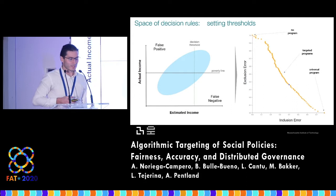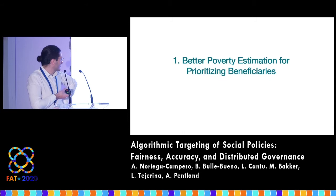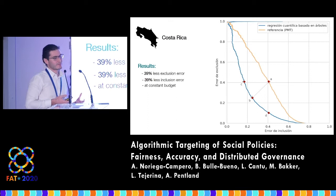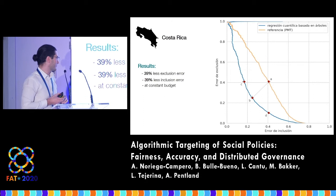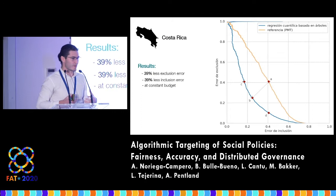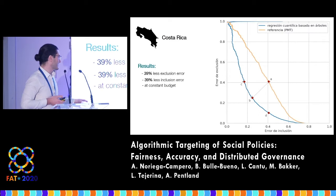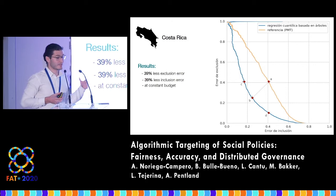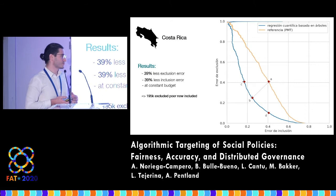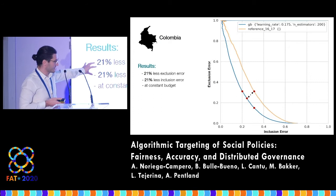How does a better poverty estimation method look like? These are results after a year of collaborating with the government of Costa Rica, where the orange line shows the reference methodology and the blue line is the best we could build together with them. Comparing point A versus point B, we were able to reduce by almost 40% both exclusion errors and inclusion errors while maintaining a constant budget. In terms of people, this means almost 200,000 poor Costa Ricans that were previously wrongly excluded from social safety nets who now can be included.